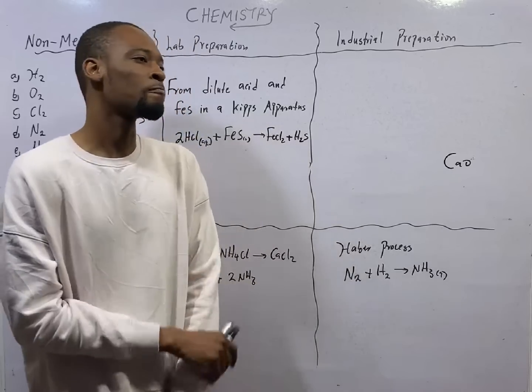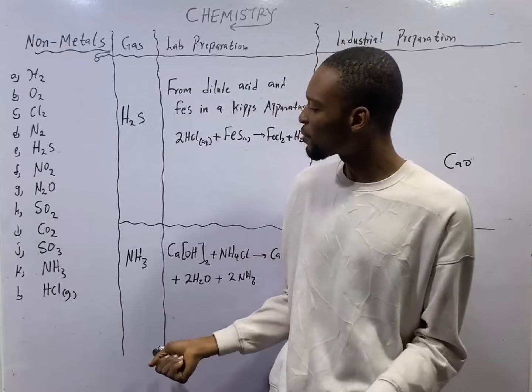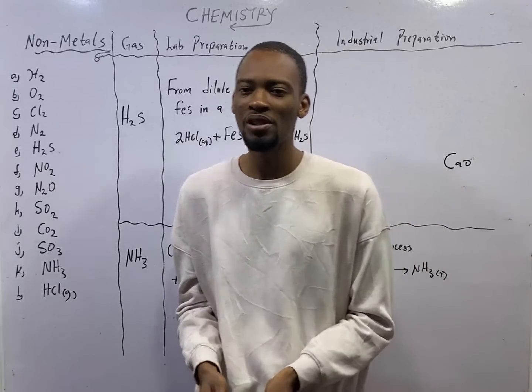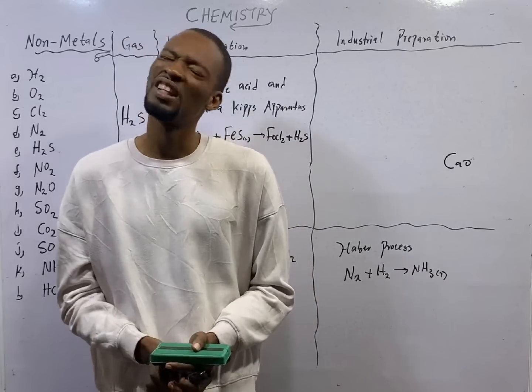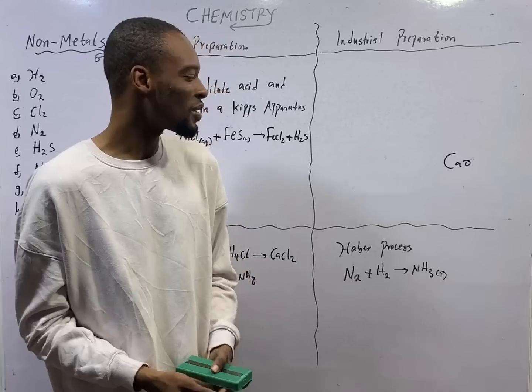Yes, I am correct. Finely divided iron is iron in powdered form. While for contact process, used to produce H2SO4, we use vanadium pentoxide. That is what we use for contact process.